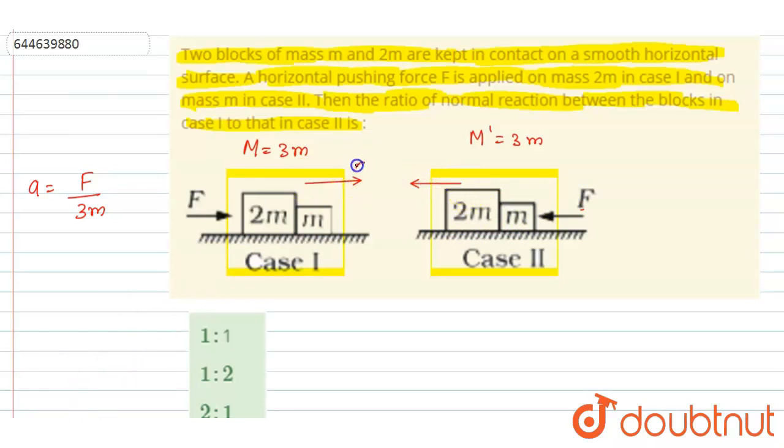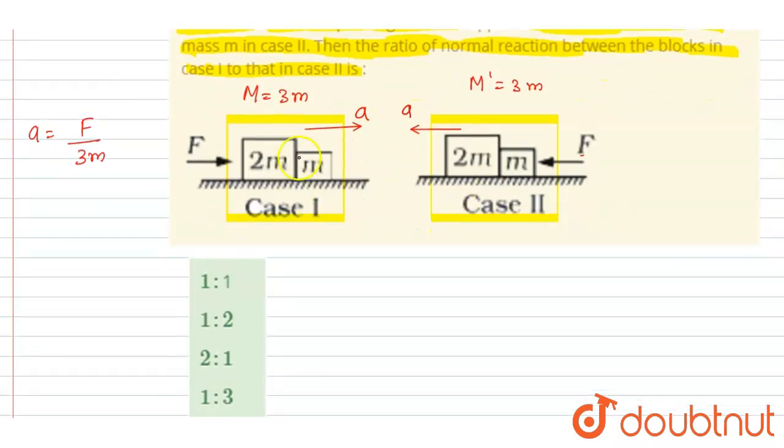so on the small block in case 1, the normal reaction on the small block is acting in this direction. And in this case you see the bigger block,